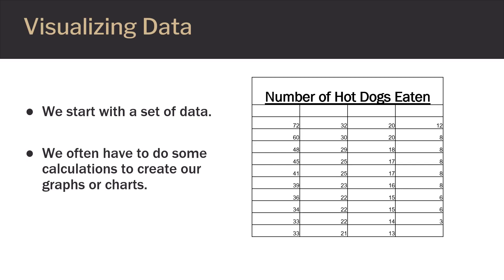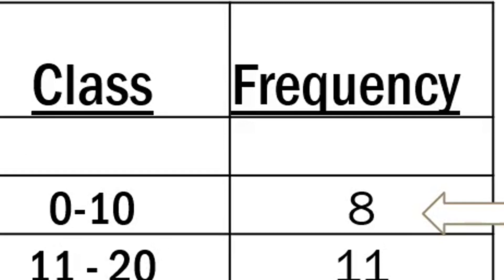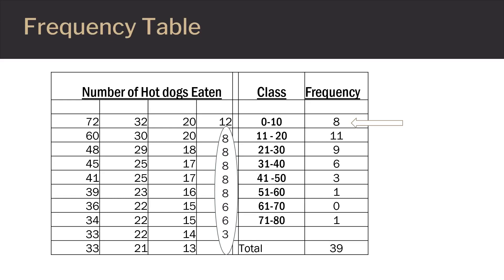In this example, we have the number of hot dogs eaten at an annual hot dog eating contest. Each number represents the number eaten by an individual contestant. For this data, we're going to start by grouping the data into classes, which are the ranges of numbers. Once we establish our classes, we can find the frequency of each class, which is the number of data values that fall into the range for that class. For instance, there are 8 values that are between 0 and 10, so 0 to 10 has a frequency of 8, which means that 8 of the data values lie in that range.